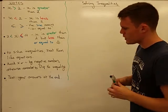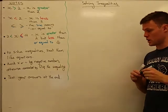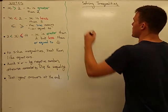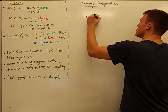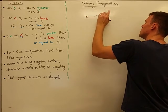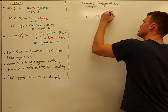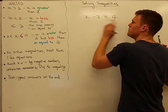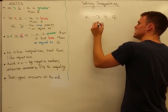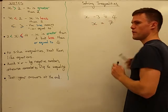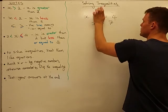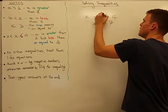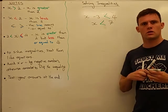Now if you can solve an equation, you can solve an inequality, because they are exactly the same. If I have x minus 3 is equal to 4, I want to solve that, I simply add 3 to both sides, so x is equal to 7. The only difference between this and an inequality is that I'll have an inequality sign.